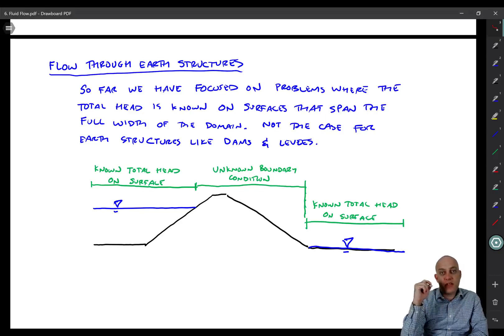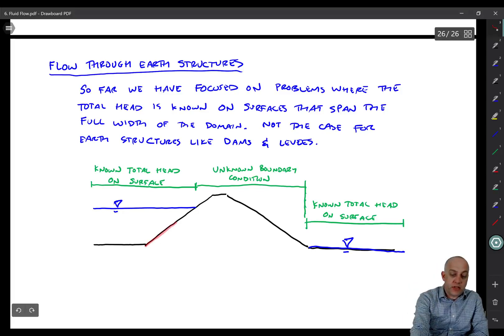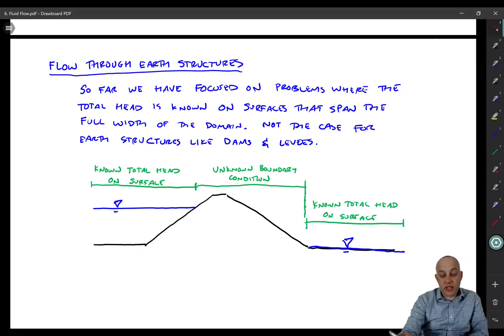The way that we'll start is to first identify surfaces where we have a known total head. So we do know the total head along the soil surface right there and right here because we're assuming that the water table side is static. We know the elevation head at all of those points and we know the pressure head at all of those points. And then the total head is going to be constant.